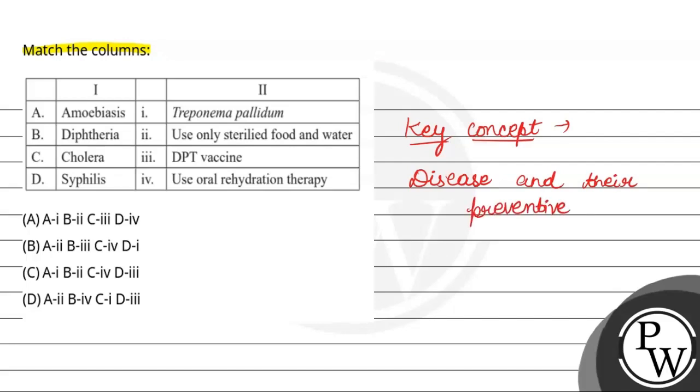In this question there are diseases and there are preventive measures. So how do we prevent that disease? And we have to match the correct columns.